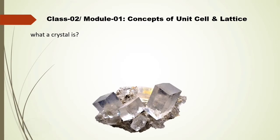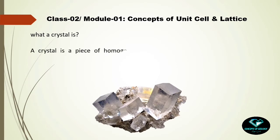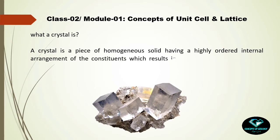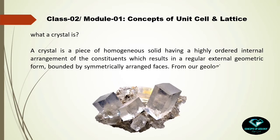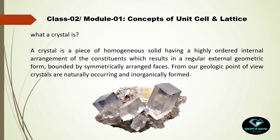Before diving into the main concepts of unit cell and lattices, we should know what a crystal actually means. A crystal is a piece of homogeneous solid having a highly ordered internal arrangement of constituent atoms, which results in a regular external geometric form bounded by symmetrically arranged faces. From a geological point of view, crystals are always naturally occurring and inorganically formed.